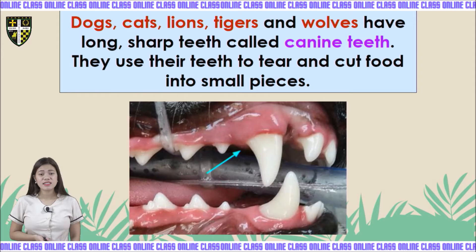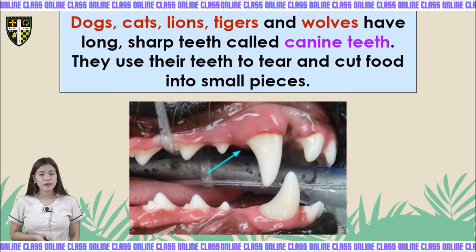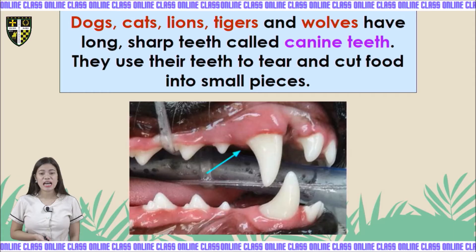Dogs, cats, lions, tigers, and wolves have long sharp teeth called canine teeth. They use their teeth to tear and cut food into small pieces.